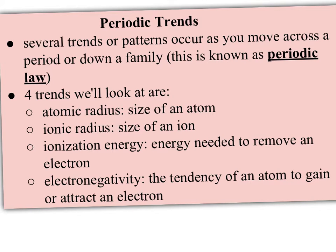And then something called ionization energy, which is the energy needed to remove an electron. And the last one is electronegativity, which is the tendency of an atom to be able to gain or attract an electron.